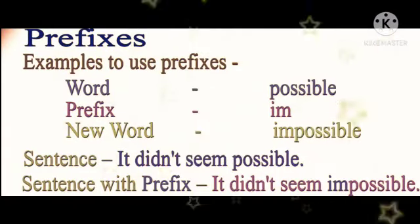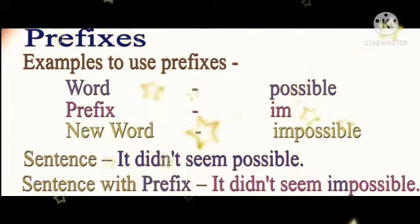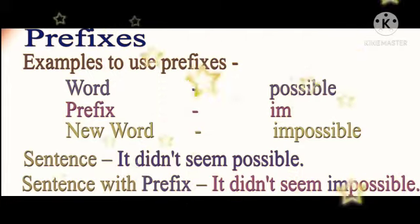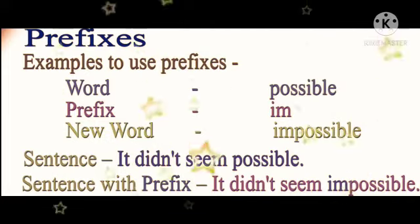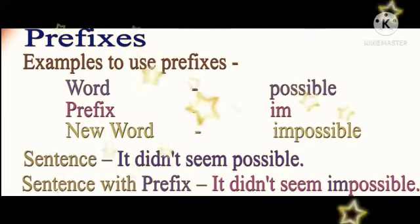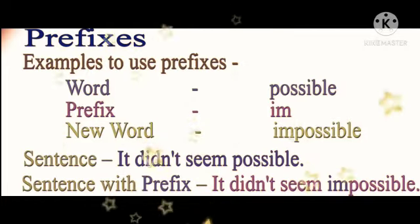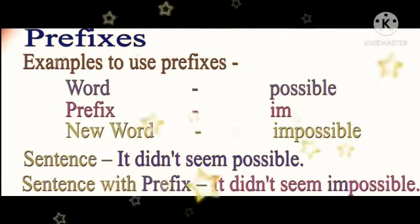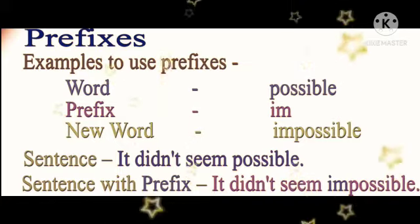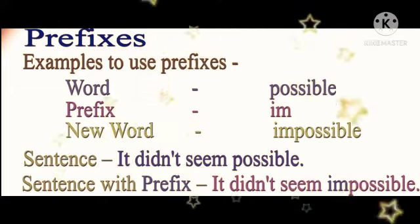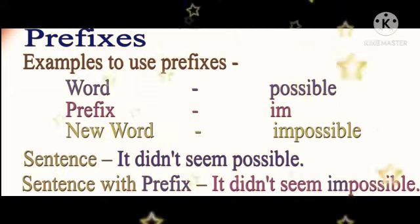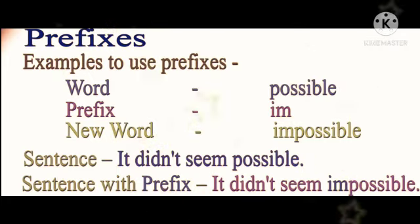Let us go through one more example. The word is possible. If we add the prefix 'im', we will get the new word impossible. It is changing the meaning of the word possible — it becomes impossible. In a sentence: 'It didn't seem possible.' After using the prefix, it will become 'It didn't seem impossible.' So we have added 'im' to make it a prefix word.